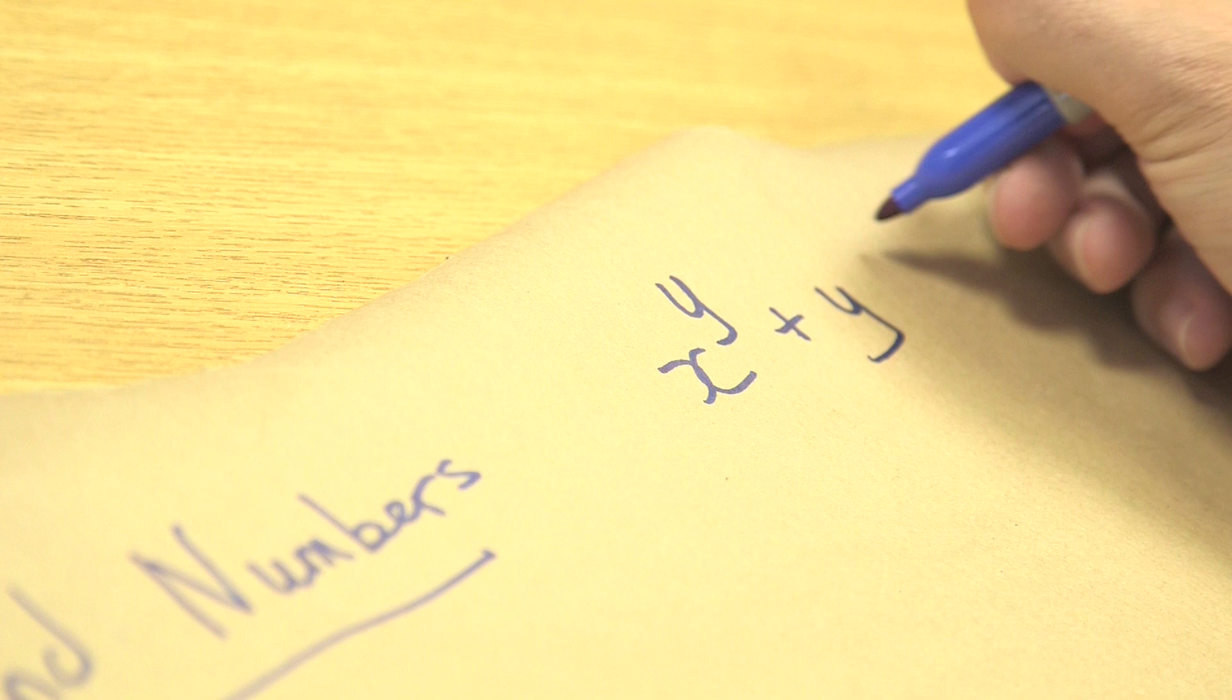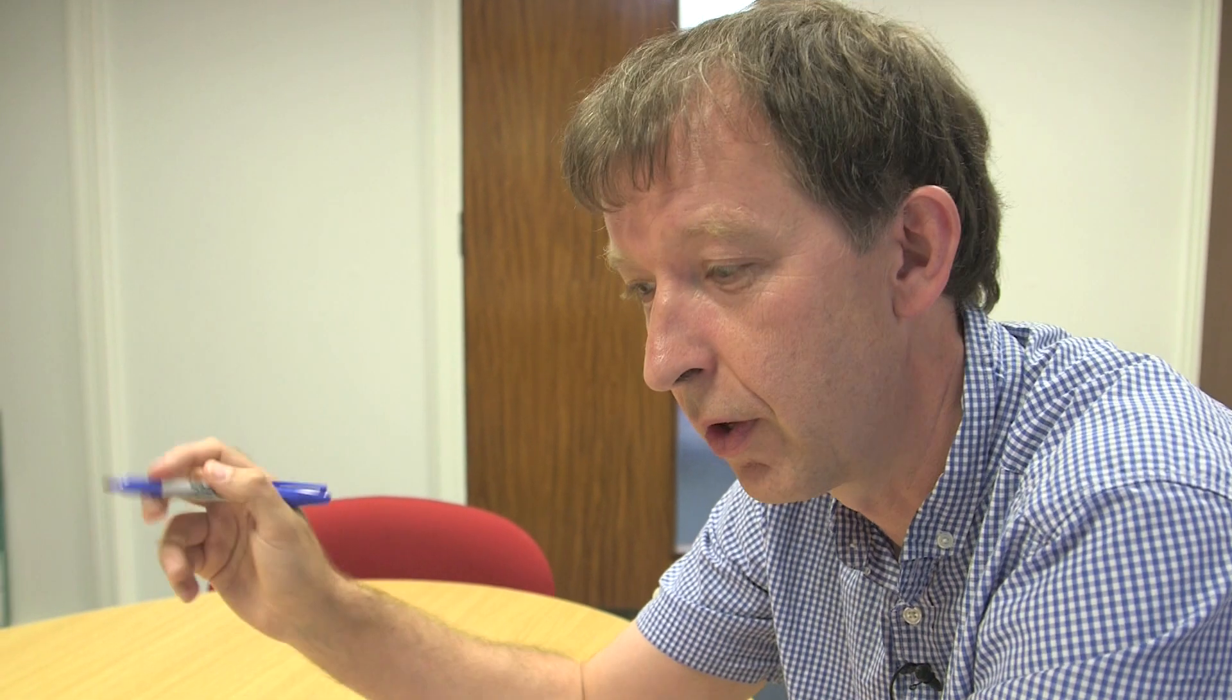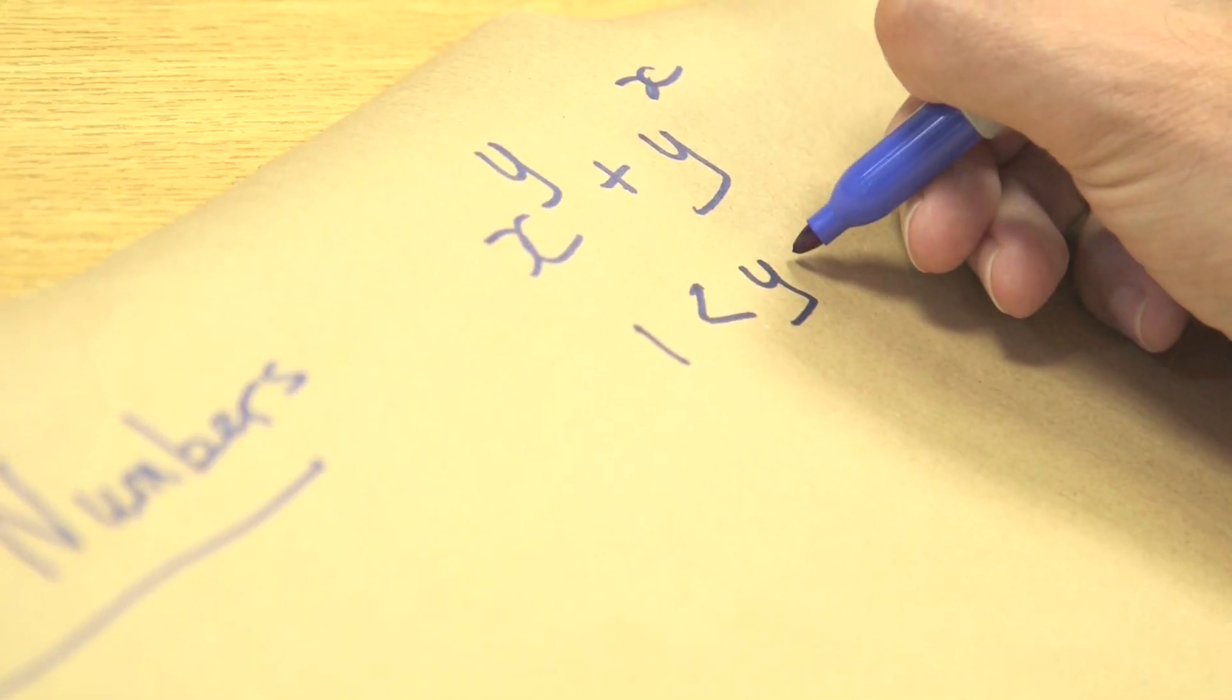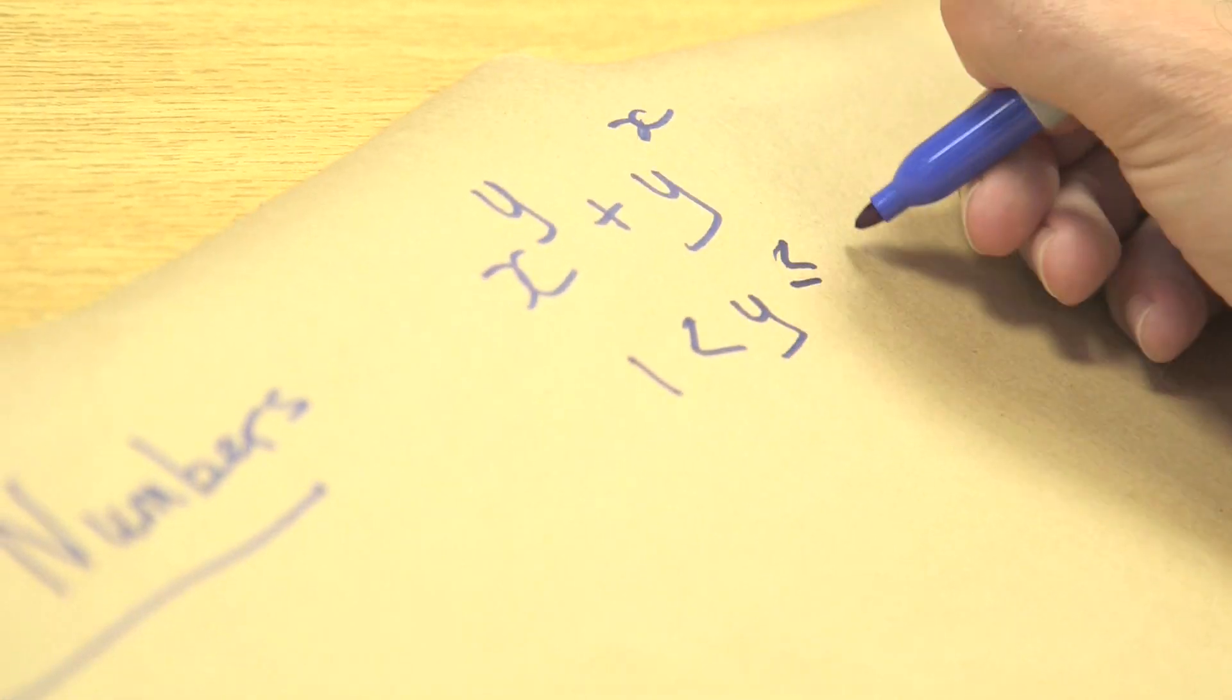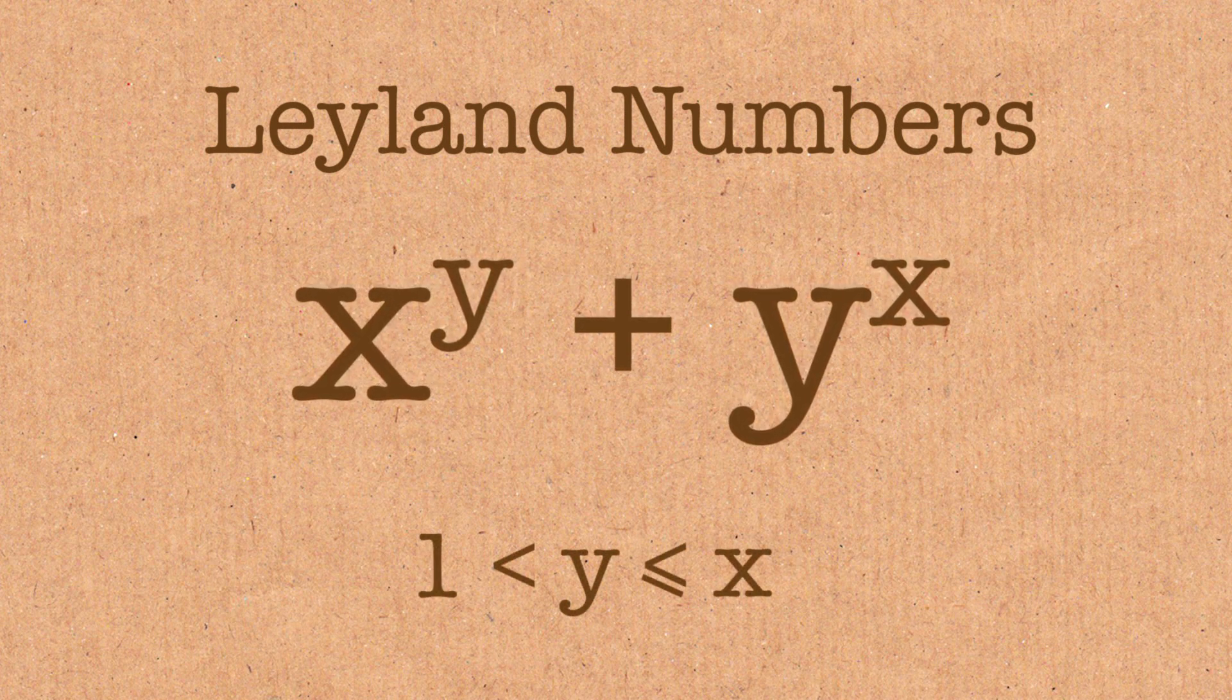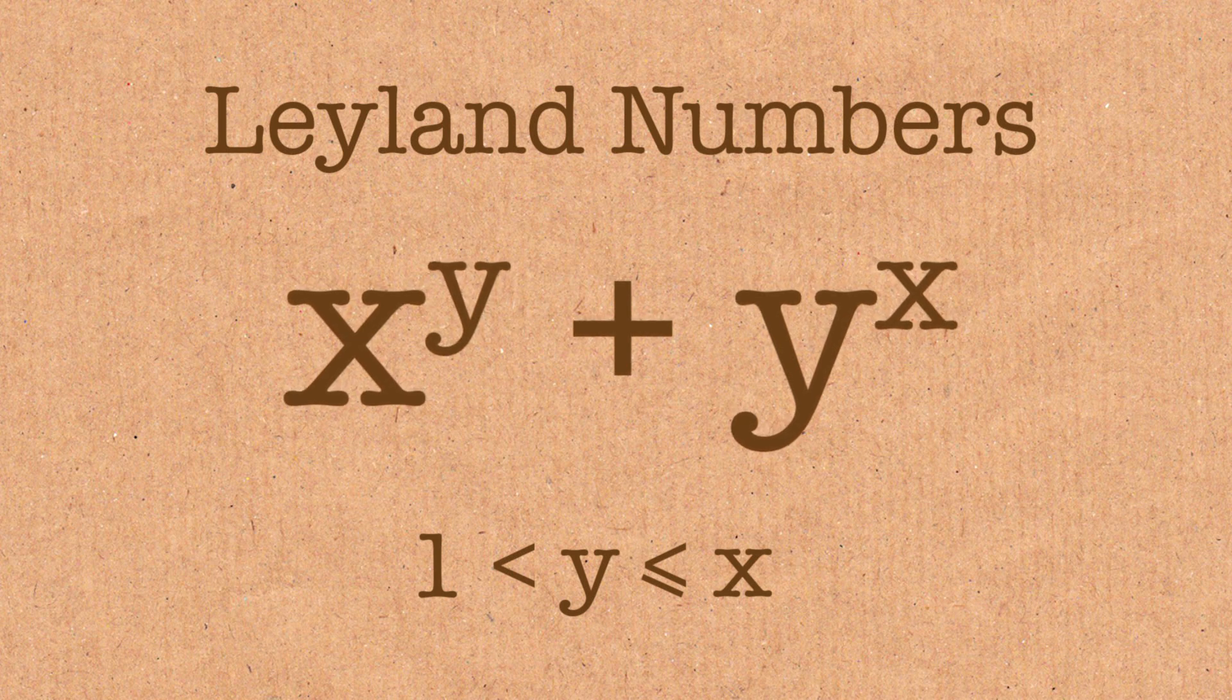If I've got two numbers, X and Y, a Leyland number is X to the power Y plus Y to the power X. The only condition on this is that X and Y must be bigger than 1. That's my only condition. And they can't be 1? No, they can't be 1. So, 1 has got to be less than Y, and by convention, you say that Y is less than or equal to X. Because it's X to the power Y plus Y to the power X, you'd just be double counting the other way around. So, just by convention, you pick one to be smaller than or equal to the other.